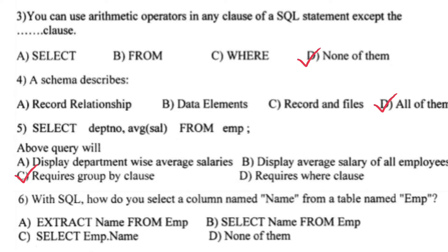With SQL, how do you select a column named 'name' from a table named 'employee'? Write optional B — select name from employee.